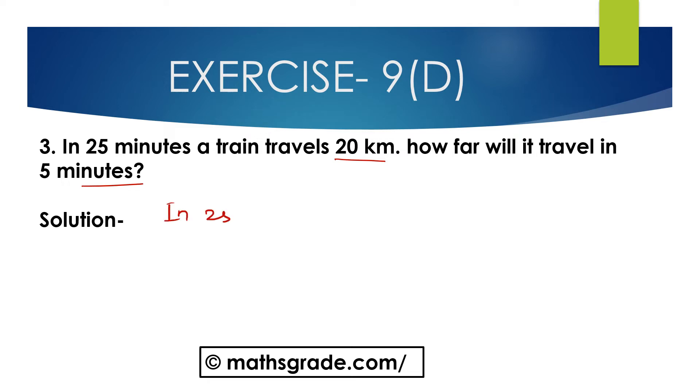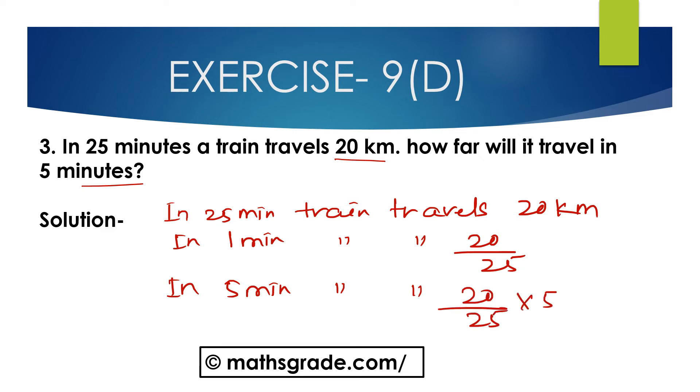In 1 minute, it will travel 20 divided by 25. In 5 minutes, the train will travel 20 divided by 25 multiplied by 5. Cancelling 5 with 25, we get 5.